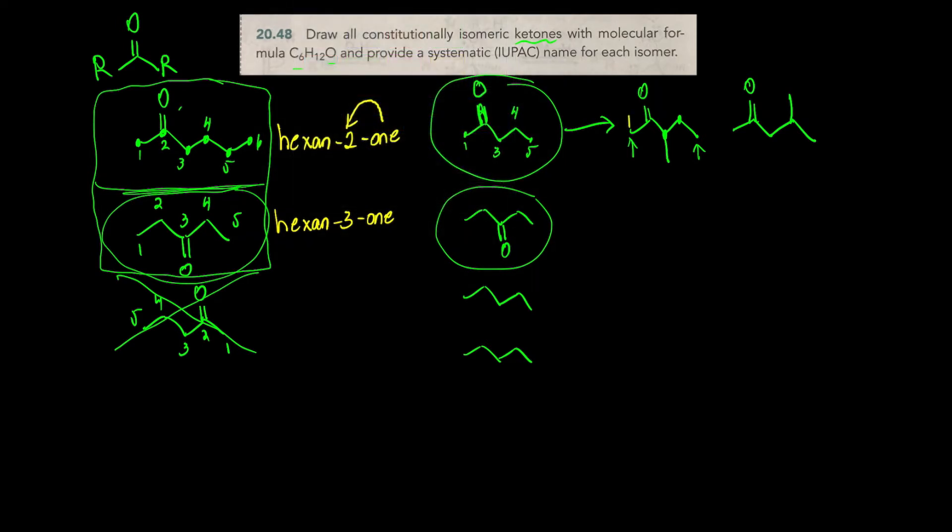So let's name these before we lose track of what we're doing here. So we number the longest chain, okay? There's going to be a methyl group at carbon three, so this is 3-methyl pentan-2-one, okay? This is going to have a similar name, except it's going to be 4-methyl pentan-2-one, okay? And I generated those two names from this template, realizing that there's five carbons in the longest chain.